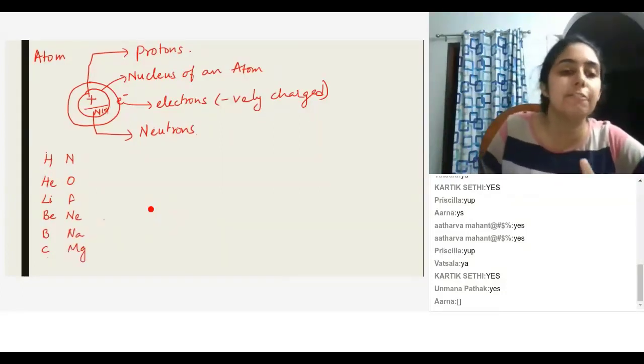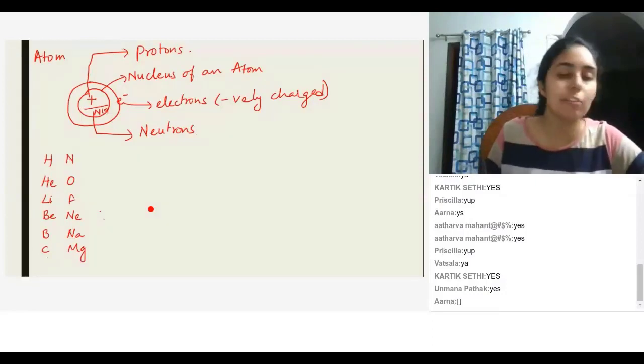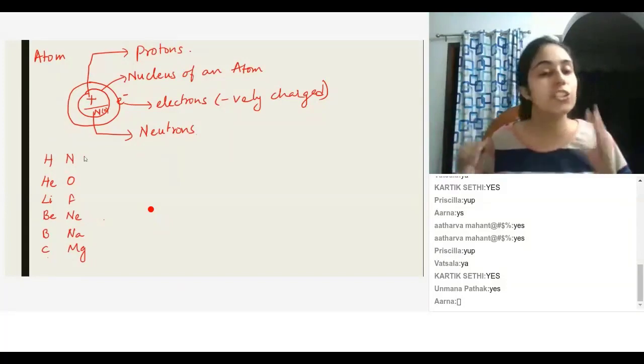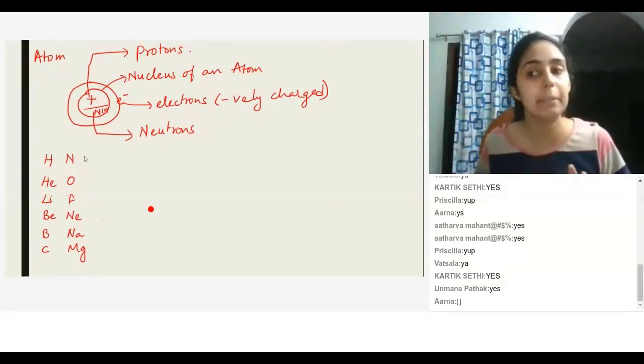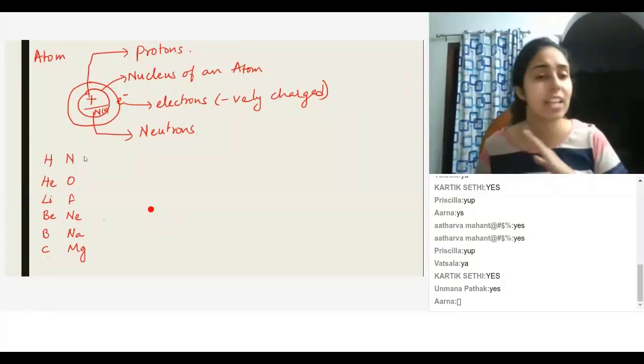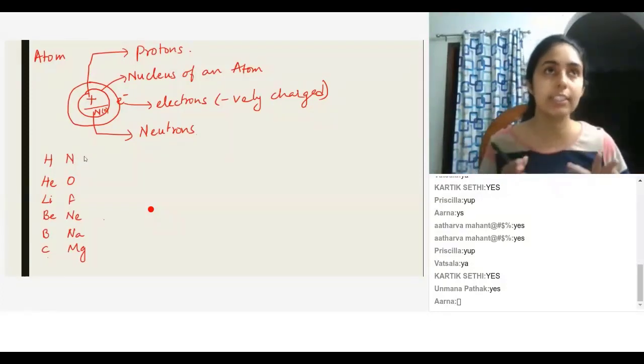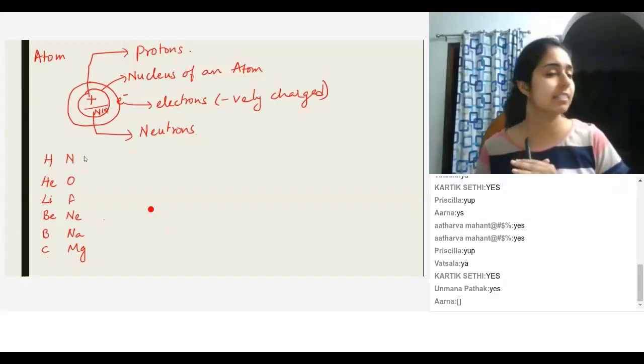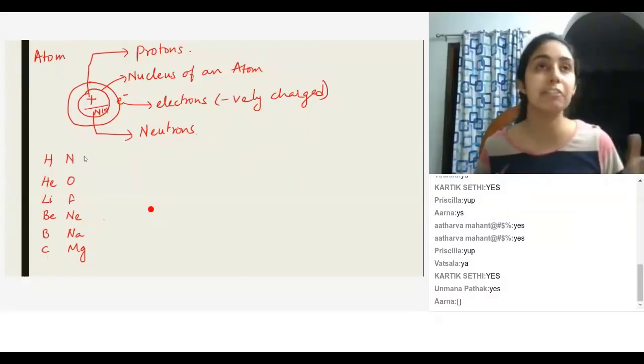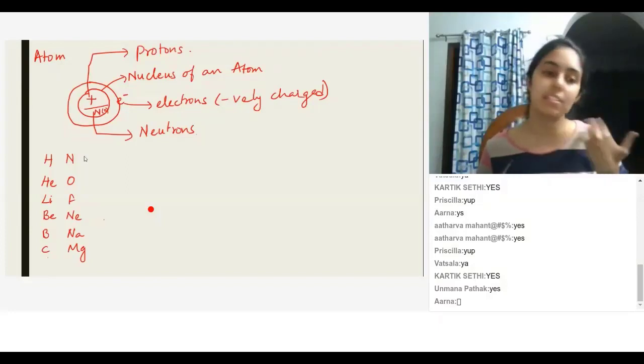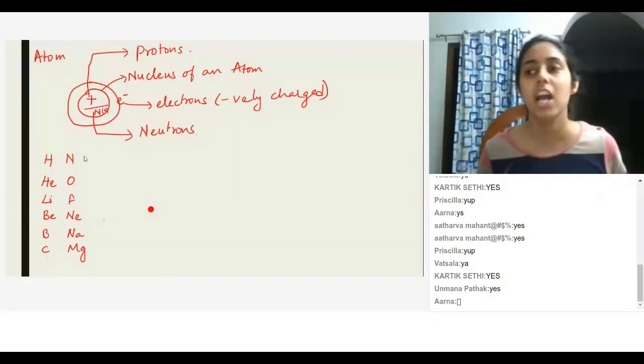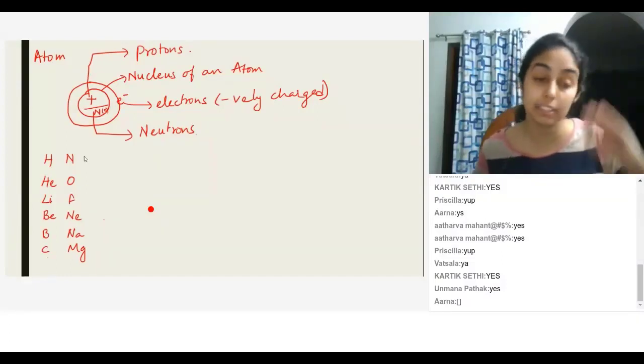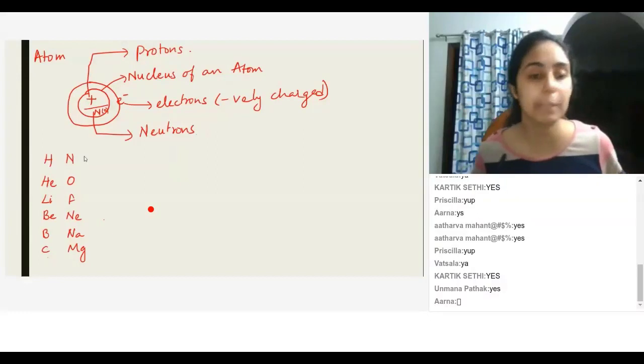These are the first 12 elements of the periodic table, and you have to remember the first 20 elements of the periodic table in that particular order. This is very important—not just for this class, but at least till your 10th class this is absolutely necessary. After that, if you want to pursue science, you have to know this. So make sure that you memorize the first 20 elements of the periodic table.